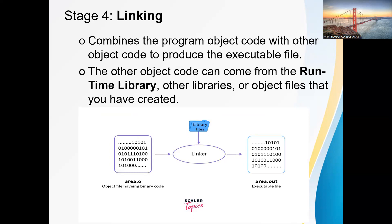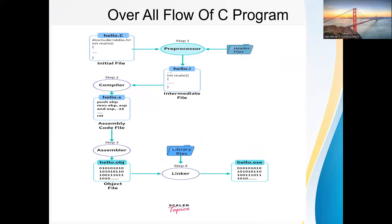Stage four is the linker. The linker combines a number of object files — whatever C code was implemented in the high-level language — along with the corresponding object files and library files. All of these are included to generate one .exe file, one output file. The extension format — .out or .exe — depends on the machine. The linker takes the particular C program's object code, includes library files and other object files, and generates the total project executable file — the particular project .exe. This is the overall flow of the C program.